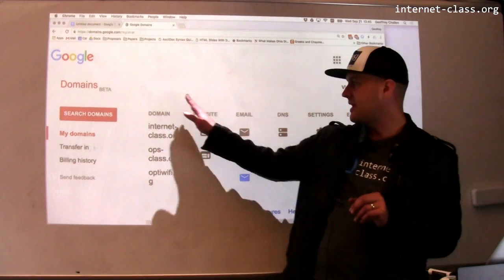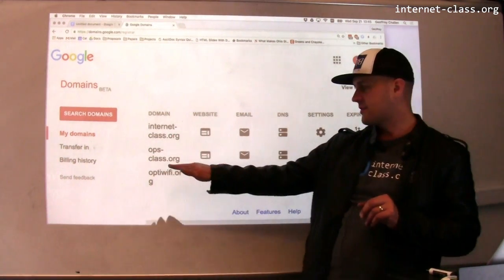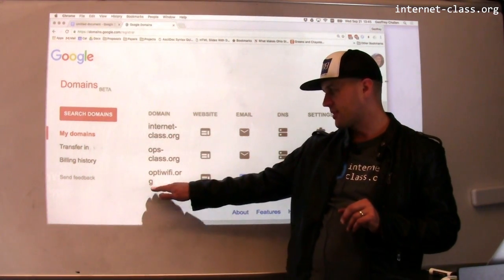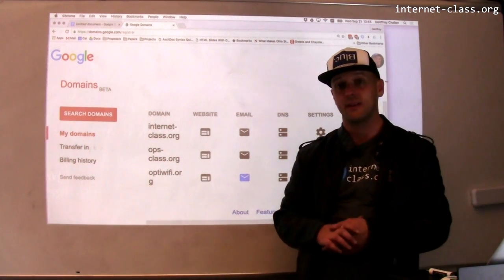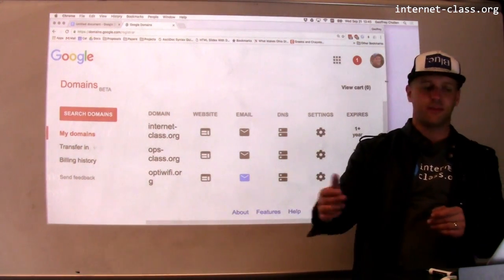So you can see, here are the domains that I operate. This is for my OS class. This is for a project that we're working on, optowifi.org. And here's internetclass.org. That's the site domain that hosts this website and some other things.